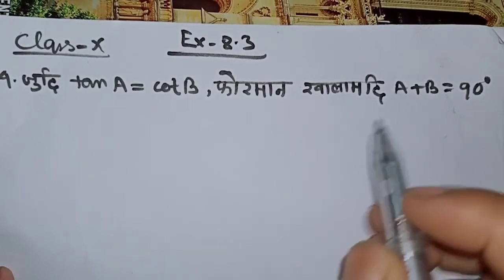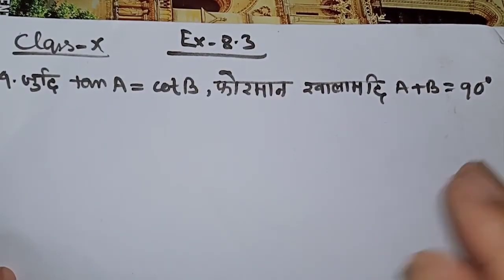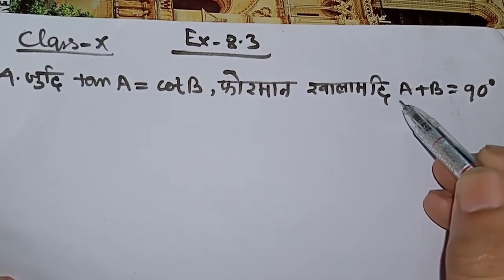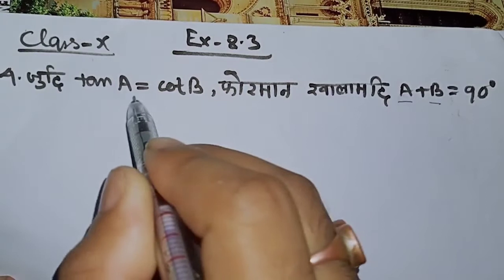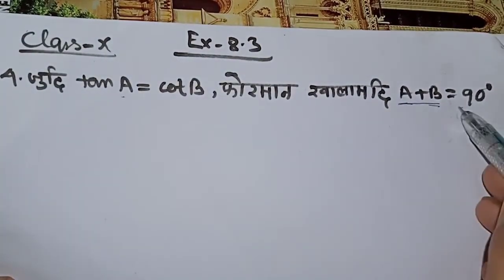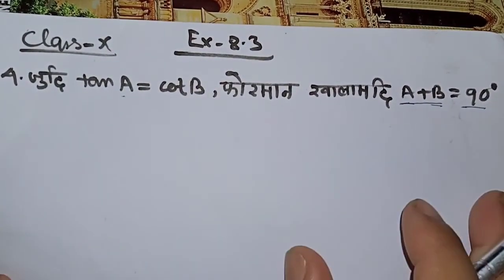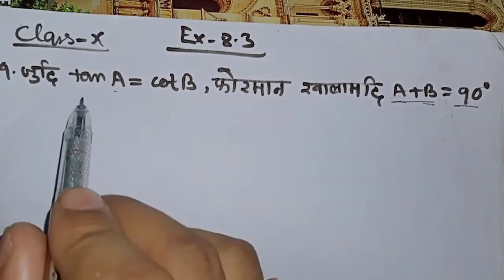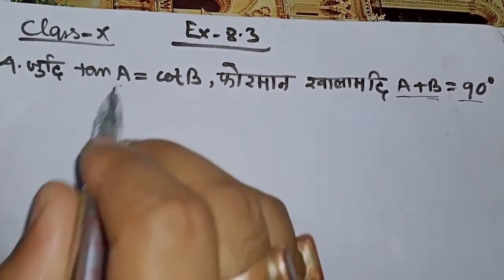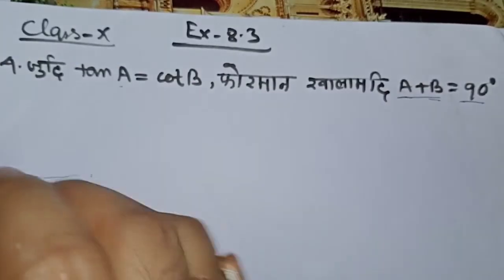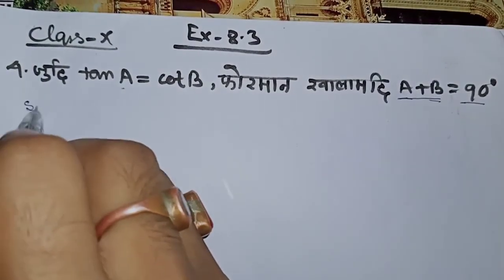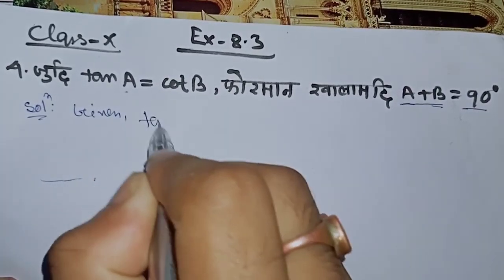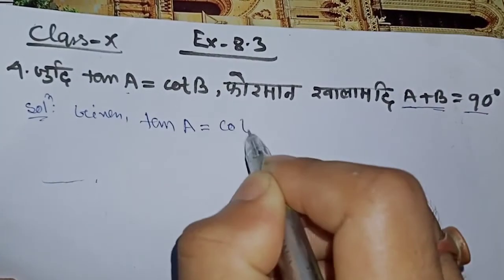Subscribe to the channel. And above, the second is a plus B should multiply — to a plus B times a minus B. So we have tan A and cot B.